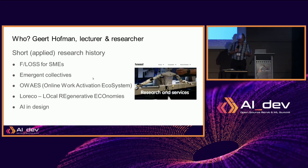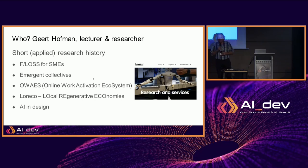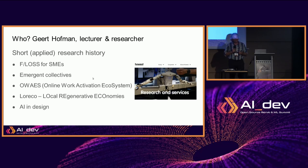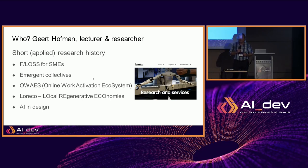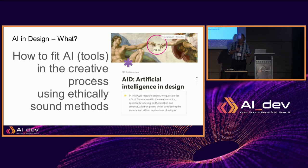The research we are doing currently — AI and design — is looking into the effects of artificial intelligence, and more specifically generative artificial intelligence, and how we can invest that in creative processes that have been used for a long time and where there is a definitive methodology used by many players in the sector. The research is called AI in Design, and it is about how to fit AI tools in creative processes using ethically sound methods.